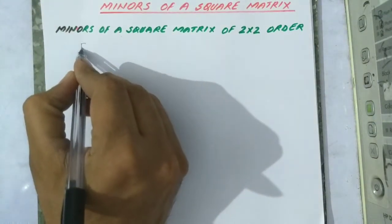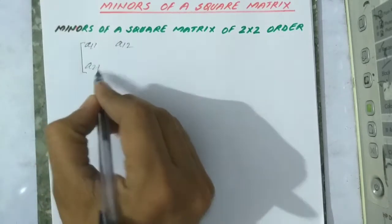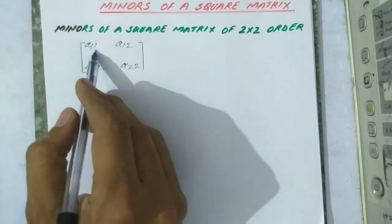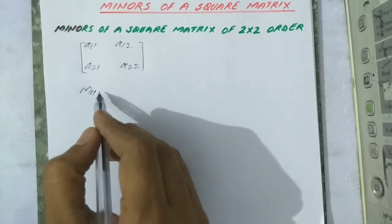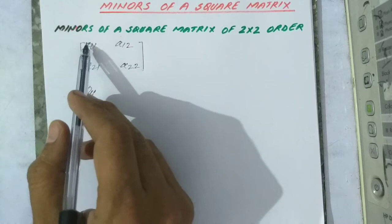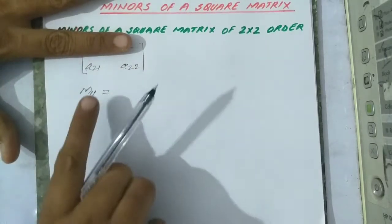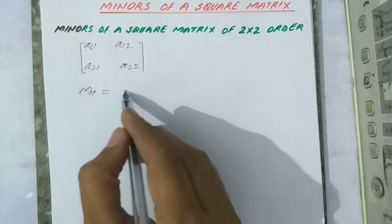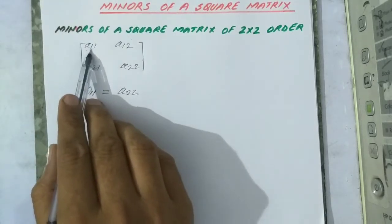Let the square matrix of 2 by 2 order be: a11, a12, a21, a22. The minor of the first element, denoted by m11, is the element left after vanishing the row and the column in which this element lies. If we vanish this row and this column, only this element is left. So, the minor of element a11 is a22.